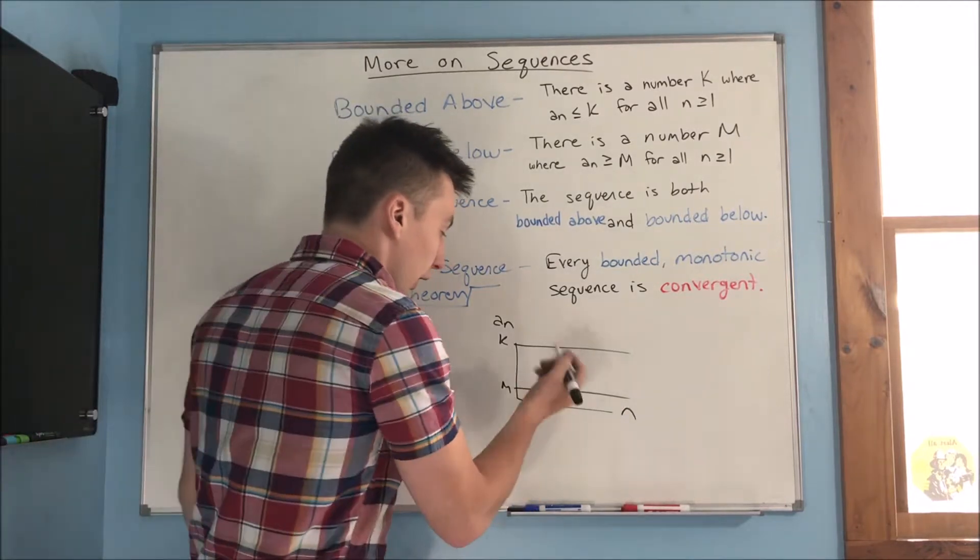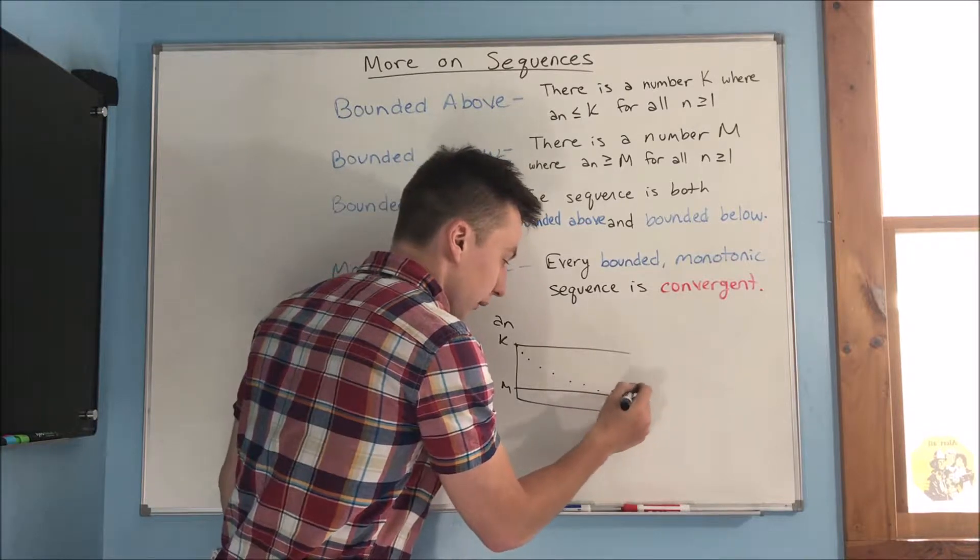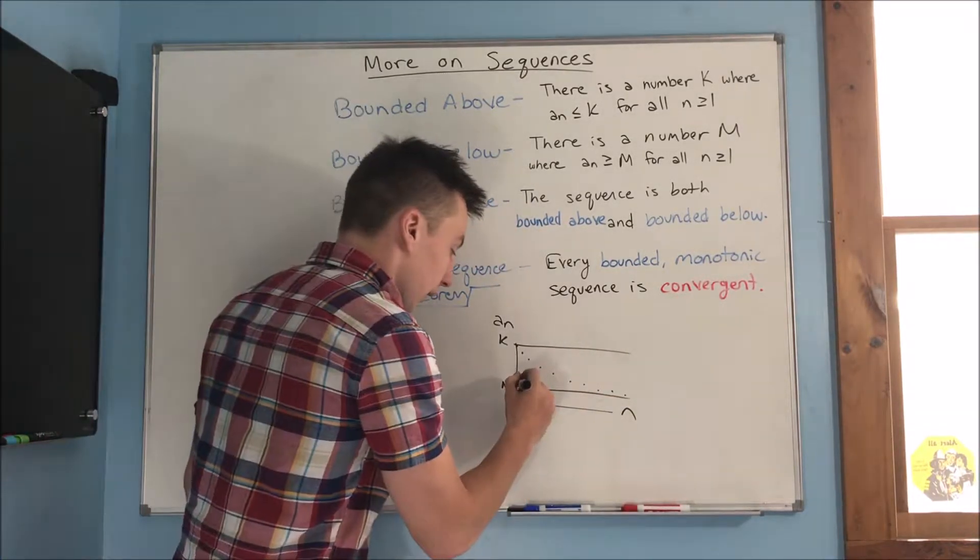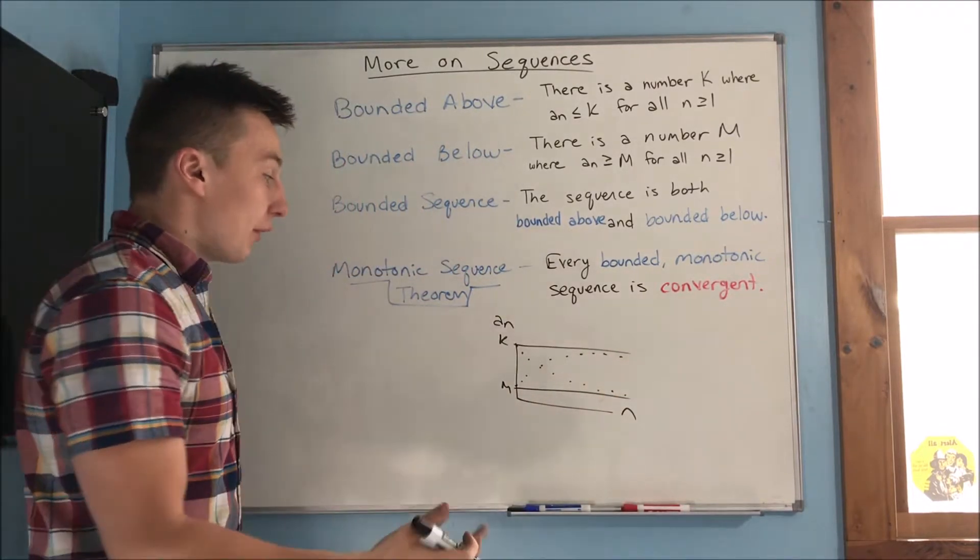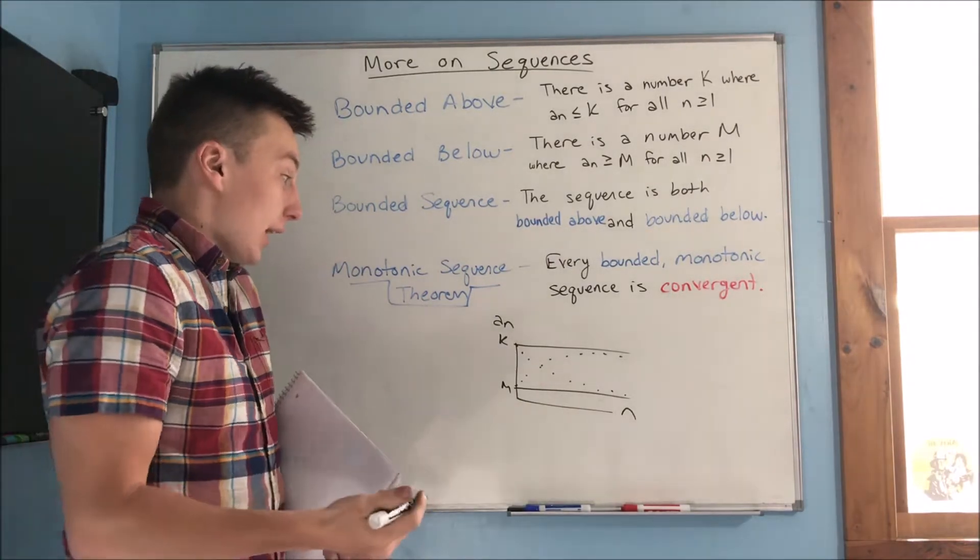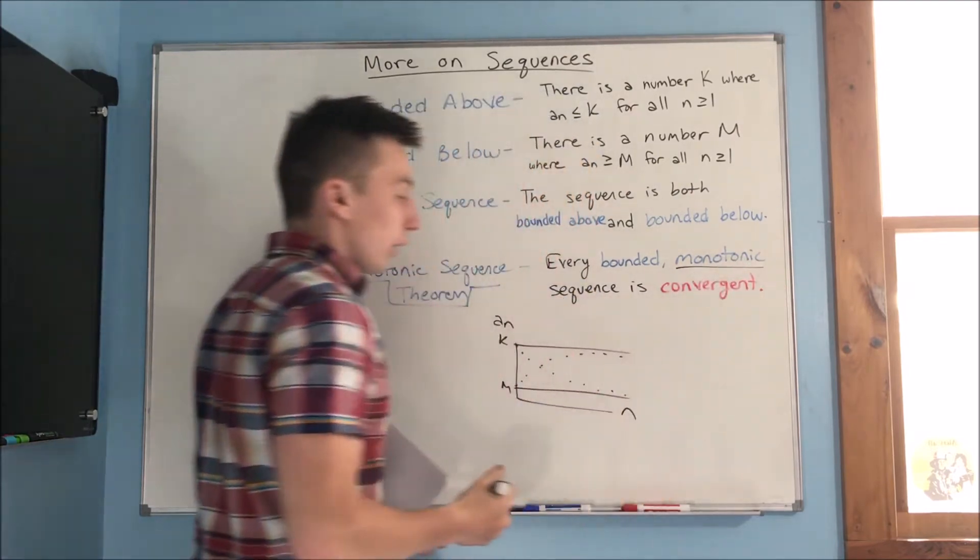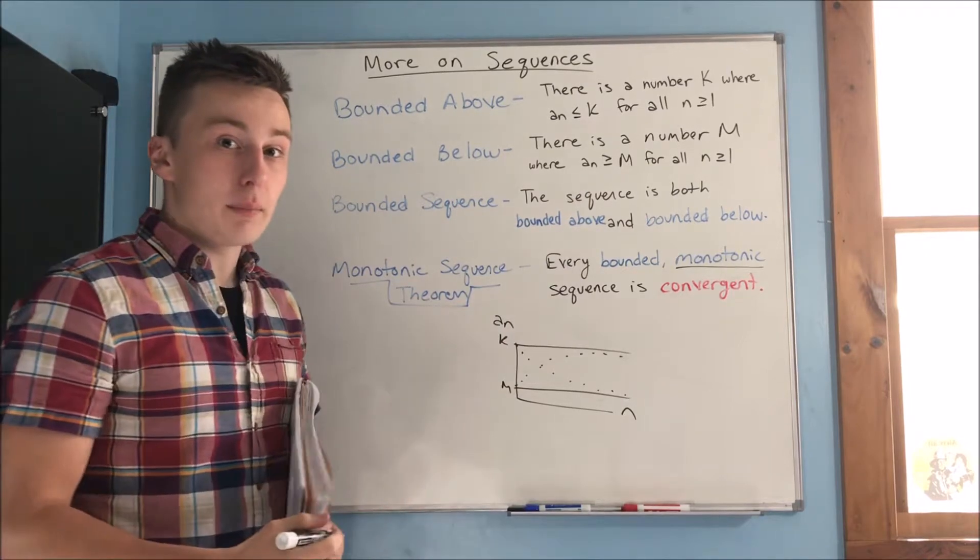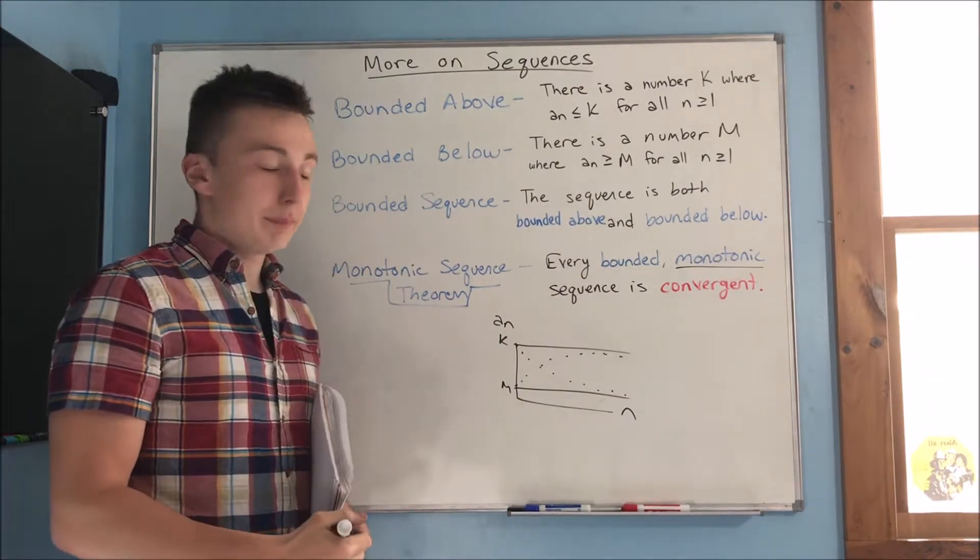So, it could look something like this. Right? That's pretty much all it can do. Or it could do something like this. So, it has to either converge to k or to m. It doesn't, it can't go anywhere else because it's monotonic. It can't just oscillate back and forth. And it's bounded, so it can't go outside k or m. So, it has to either converge to k or converge to m.